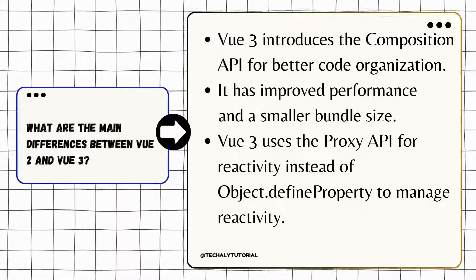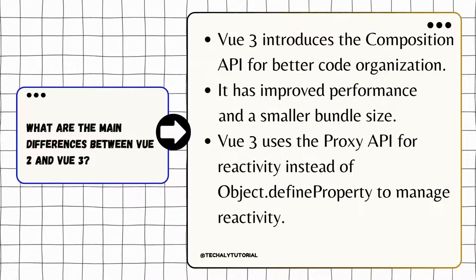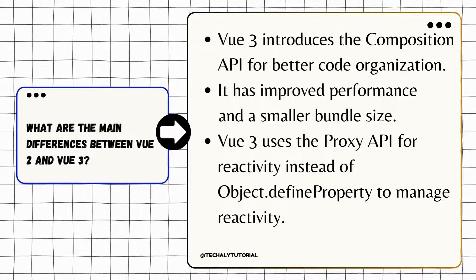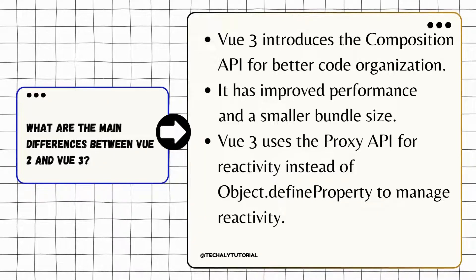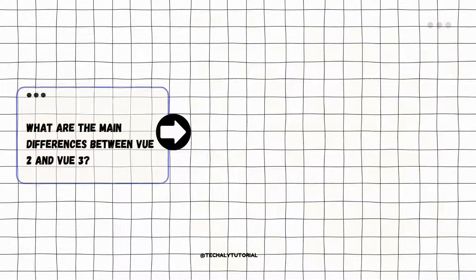Main differences between Vue 2 and Vue 3: the Composition API allows more flexible code organization. Vue 3 offers improved performance and a smaller bundle size. Vue 3 also uses the Proxy API instead of Object.defineProperty to manage reactivity.